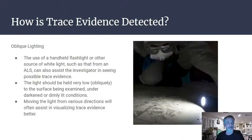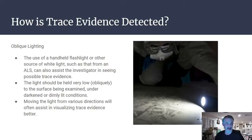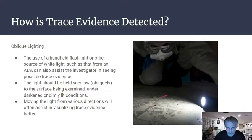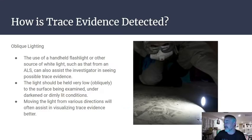Another technique is oblique lighting — using a normal flashlight held at a very low angle to the surface being searched. This creates shadows that help visualize trace evidence that wouldn't otherwise be seen. Moving the light from various directions also assists in visualization.